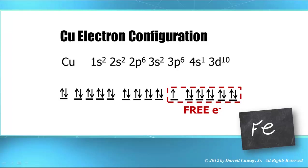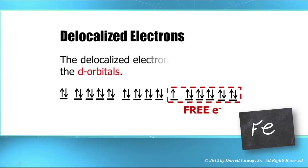And so those are called delocalized electrons. The delocalized electrons come from those d orbitals, and they're the free electrons.